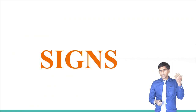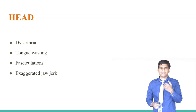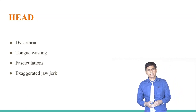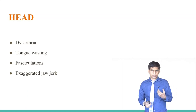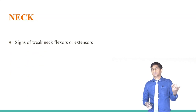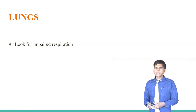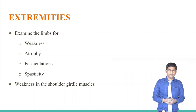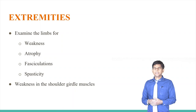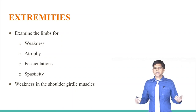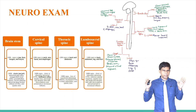When examining the patient, starting from the head and neck: there will be dysarthria, tongue wasting, fasciculations, and exaggerated jaw jerk. In the neck, flexor and extensor weakness is noted. Respirations are affected due to diaphragm involvement. In the extremities, mainly the legs, there is weakness, muscle atrophy, fasciculations, spasticity, and weakness in the shoulder girdle muscles.